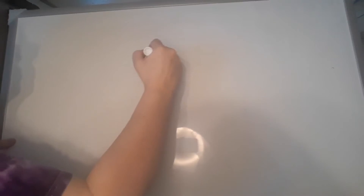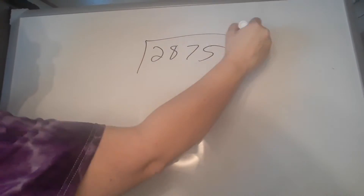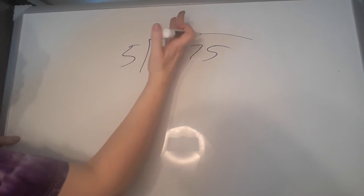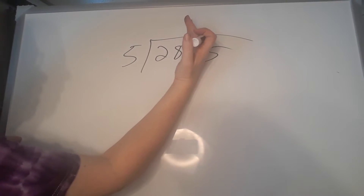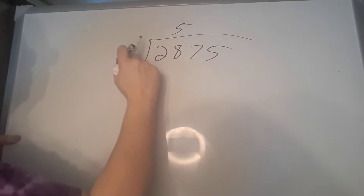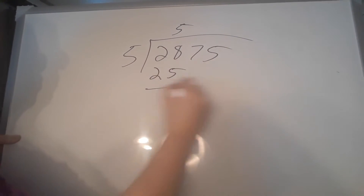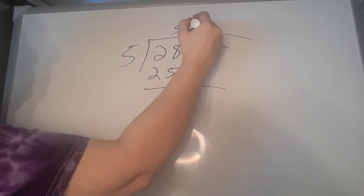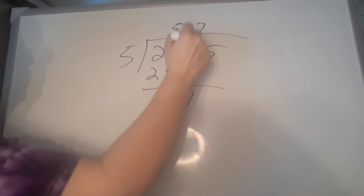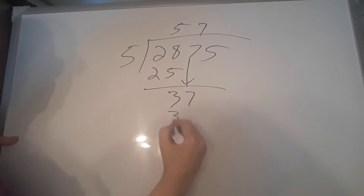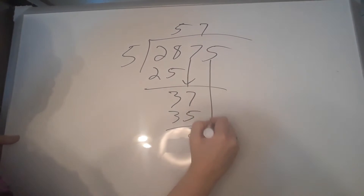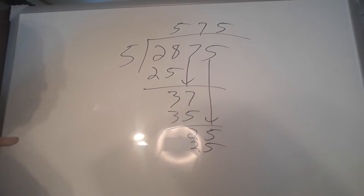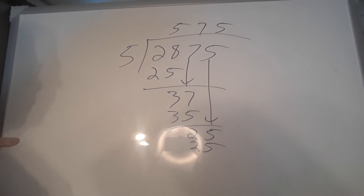Let's look at another one: 2875 divided by 5. It doesn't go into 2, but it will go into 28 five times. 5 times 5 is 25. We have 3 left over and down comes the 7. Notice the 5 is above the 8 and the 7 is above the 7. 5 times 7 is 35. We have 2 left over and the 5 comes down. And 5 times 5 is 25.